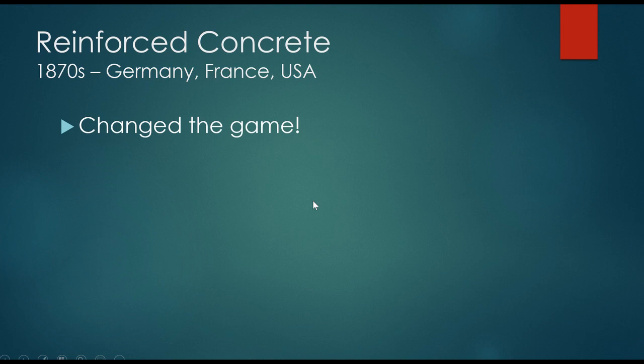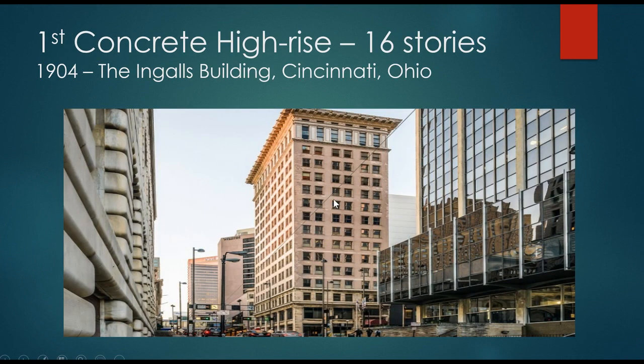Reinforced concrete, which came around in the 1870s, really changed the game. This coincided with the development of cast iron and steel as an iron alloy to be used as reinforcing. In 1904, we had the first concrete high-rise in the US — the Ingalls Building in Cincinnati, Ohio — a 16-story building, a major accomplishment for a material barely 20–25 years old in the US.